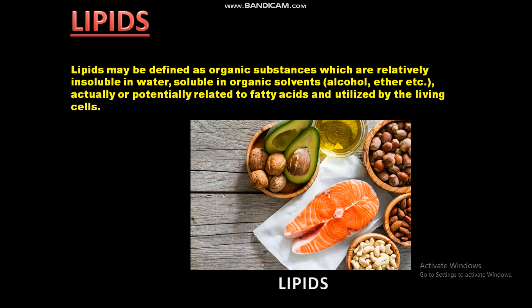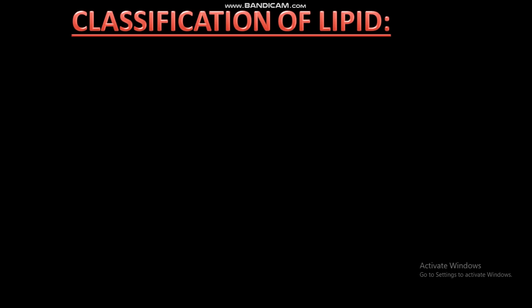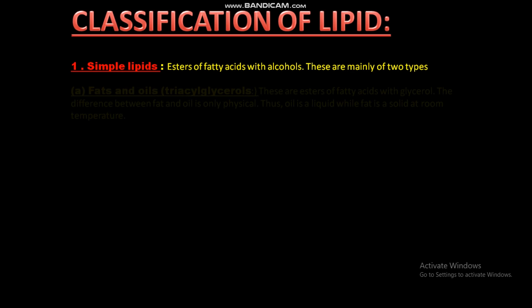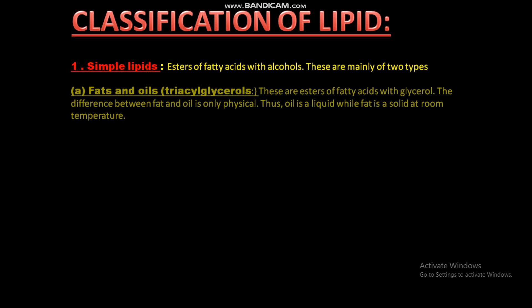Classification of lipids. 1. Simple lipids: esters of fatty acids with alcohols. These are mainly of two types. A. Fats and oils (triacylglycerols): these are esters of fatty acids with glycerol.